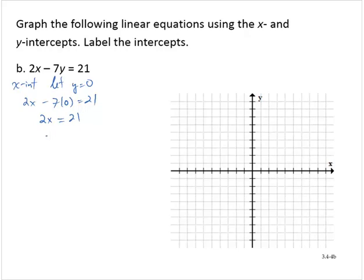And so then x would equal 21 divided by 2. I divide both sides by 2, and so x would equal 21 over 2, or if you want a mixed number, 10 and 1 half. I'll just use the improper fraction, 21 halves comma 0.